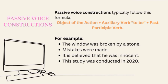'It is believed that he was innocent.' This is a passive voice construction because the subject, it, is not the agent or performer of the action, believing. The agent is very general and diffuse in this sentence, which means we don't need to say who believes it. The verb phrase 'is believed' is formed by using a form of 'to be' and a past participle of a transitive verb, believed.